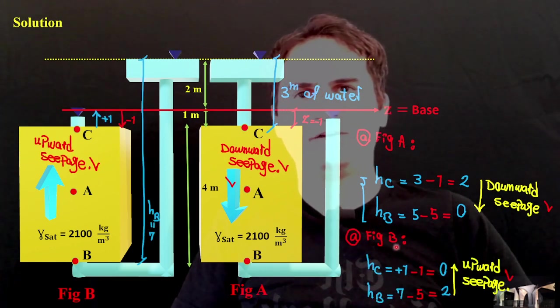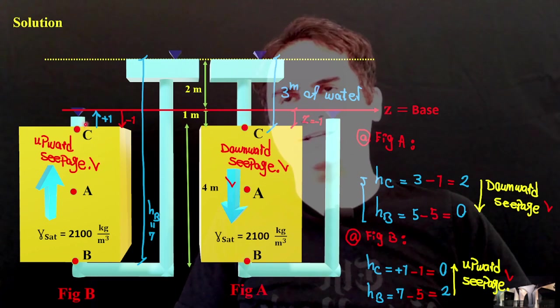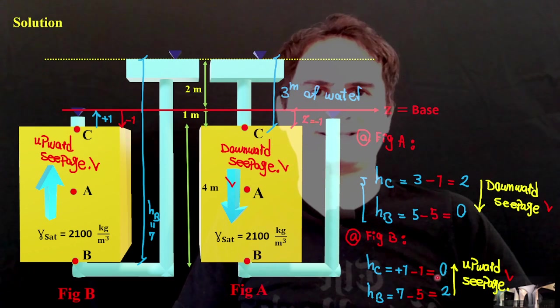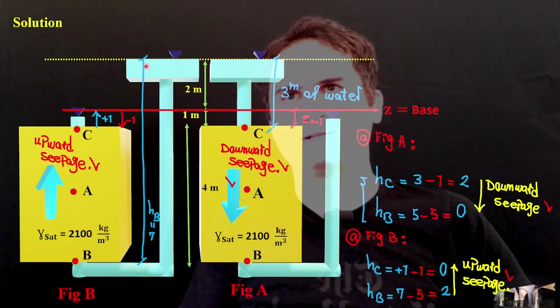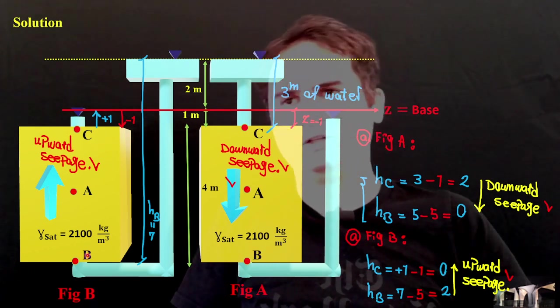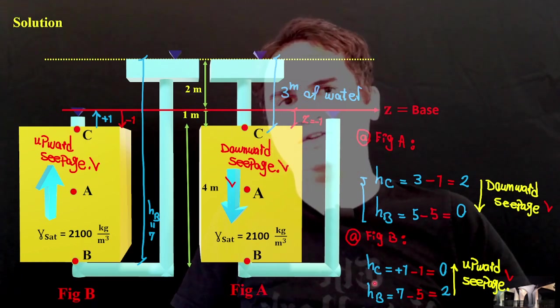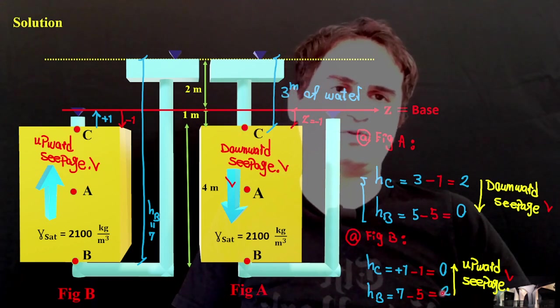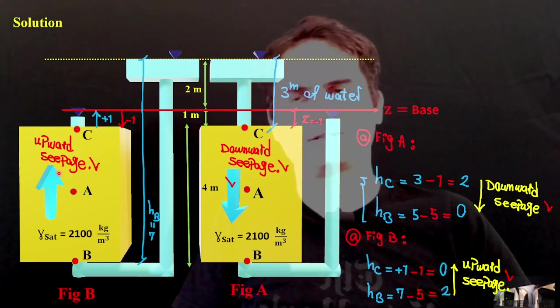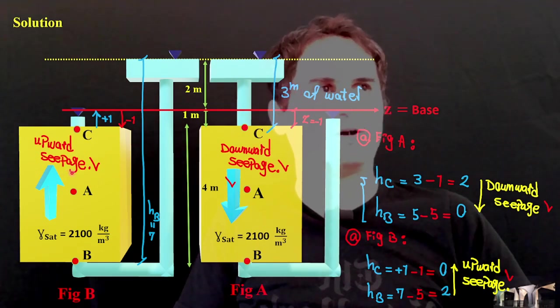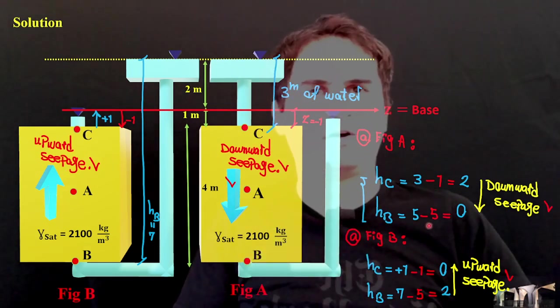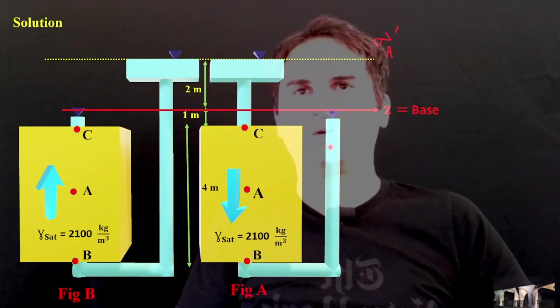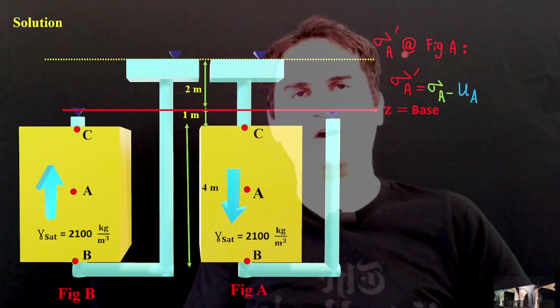And if we do the same for figure B, H at C here is positive 1 due to amount of water and negative 1, that's 0. And H_B is the total amount on the top of the head of point B, which is 7 minus Z, which is a negative 5. And this time, it just goes from higher to lower, which is from B to C. This is also an upward seepage. As soon as we verify our seepage direction, we can just jump to our problem for calculation of sigma prime at A.